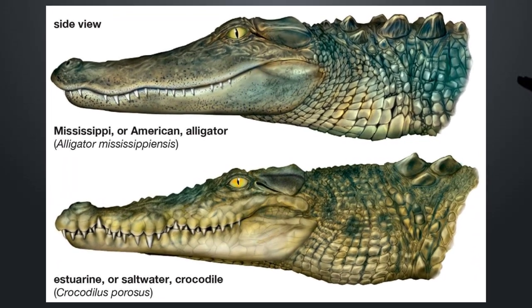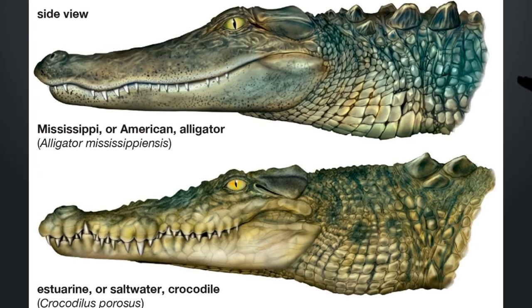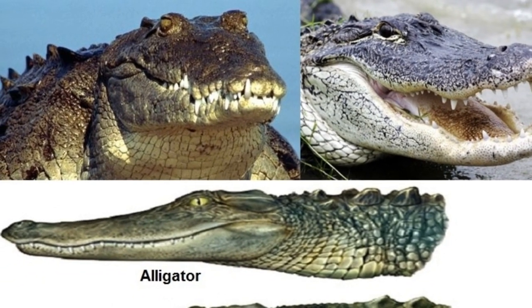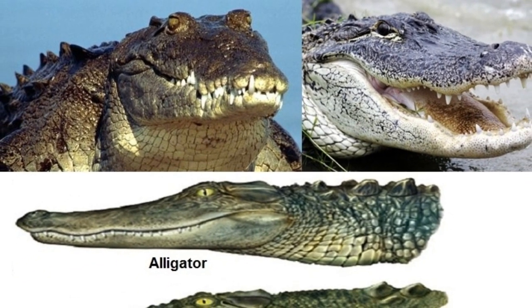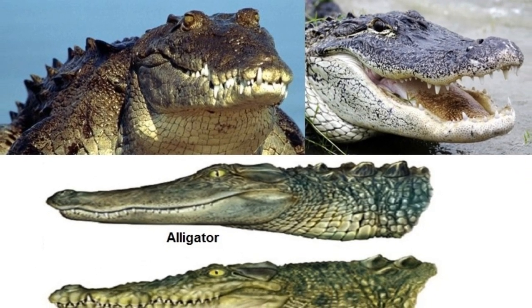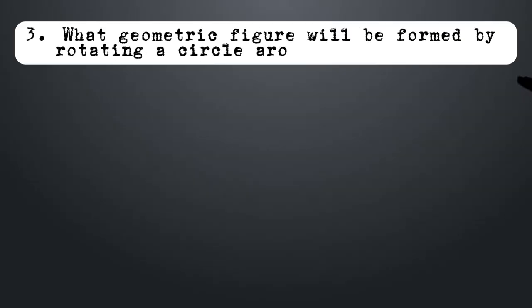Alligators have 4 teeth that fit inside the jaw, whereas crocodiles' teeth are visible when their mouths are closed. Crocodiles typically inhabit saltwater, while alligators are mostly found in freshwater. What geometric figure will be formed by rotating a circle around its diameter?